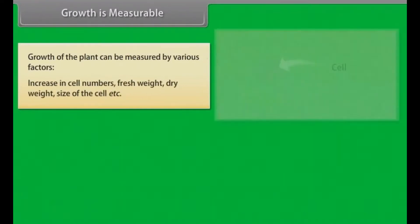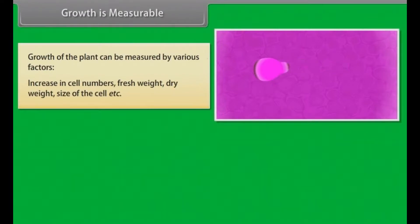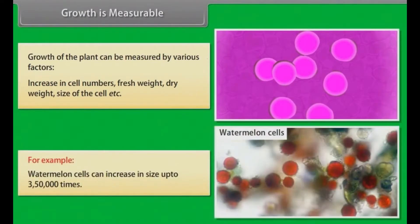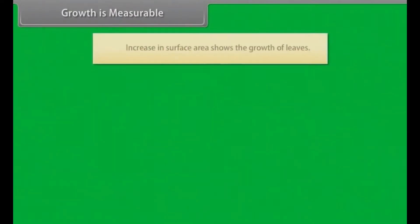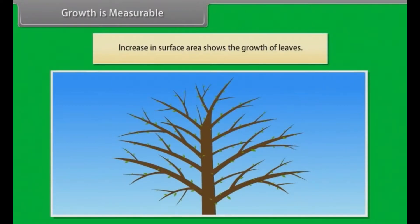Growth is measurable. Growth of the plants can be measured by various factors: increase in cell numbers, fresh weight, dry weight, size of the cell, etc. For example, watermelon cells can increase in size up to 350,000 times. Increase in surface area shows the growth of leaves.